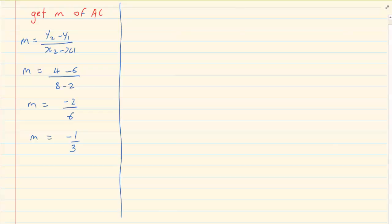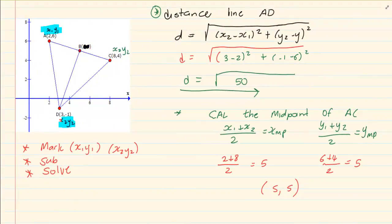And then they say calculate the gradient of BD. Now if you look at B we have calculated B from here where they said calculate the midpoint of AC. Now AC was this line. So the midpoint is at B which is now 5 and 5. Now how do we calculate the gradient of BD? We know we've already marked D as x2 y2. So what we're going to do is mark this as x1 y1. Now we're going to substitute.